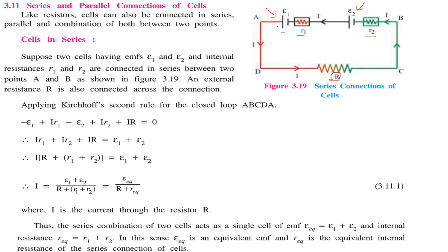The current will take this direction and we will move in the ABCDA direction. When we go here, it is going from higher to lower potential, so we get a negative term. We are going from higher potential to lower potential, so we take it as negative. Since we are moving in the opposite direction to the current, this will be positive: I into R1. Then, for the same reason, this will be minus E2, and since we are moving in the opposite direction of current, we take plus I into R2.